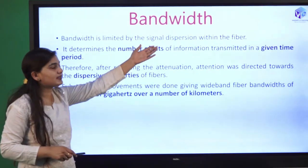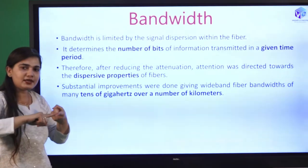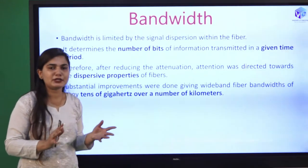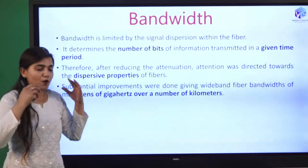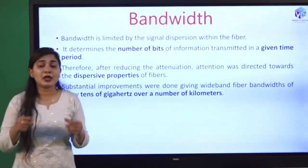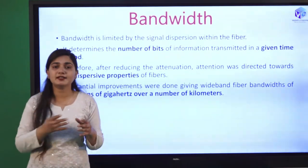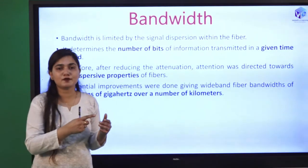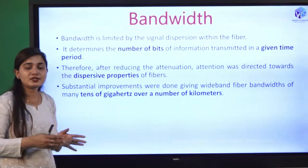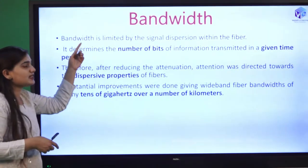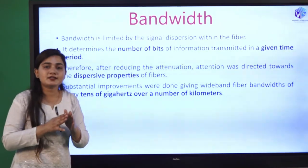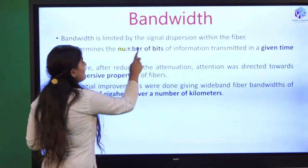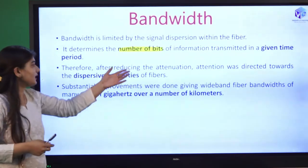Now bandwidth is limited by signal dispersion within the fiber. The first problem was signal attenuation, which we have discussed. The second factor is bandwidth — I want as high a bandwidth as possible. When bandwidth is high, I can transmit the signal at a very high rate and the channel capacity would be high. Bandwidth is a very important determining factor for optical communication. It is limited by signal dispersion. As the signal disperses, it is expanded in the time domain, and then the bandwidth will be reduced.